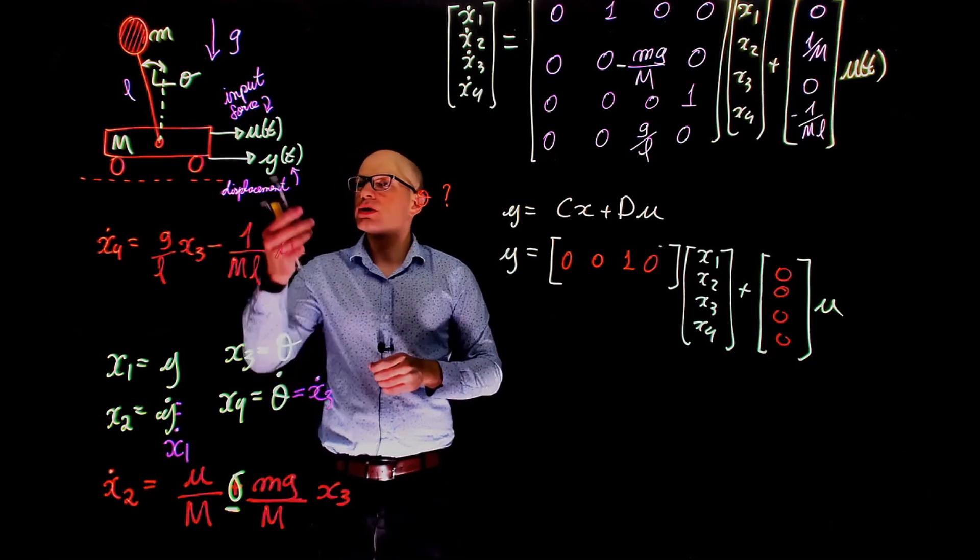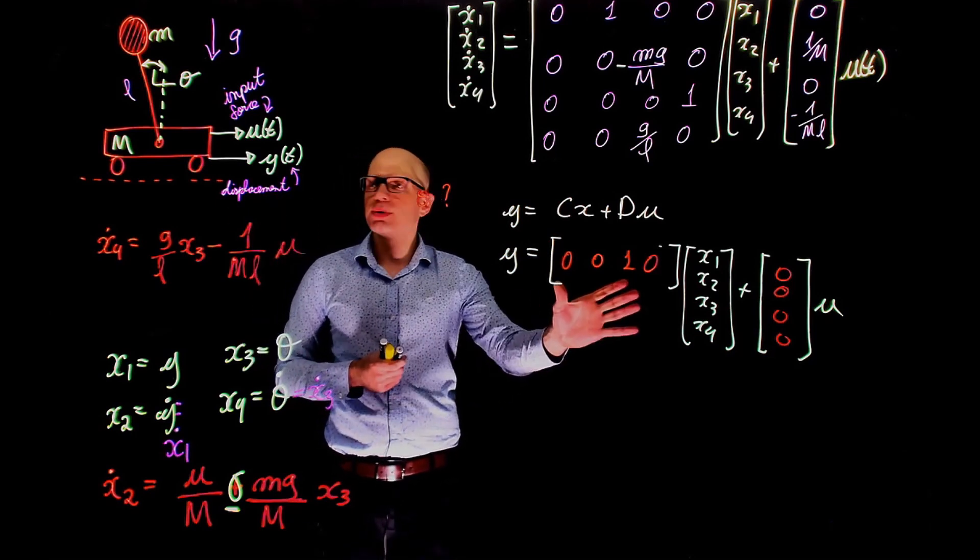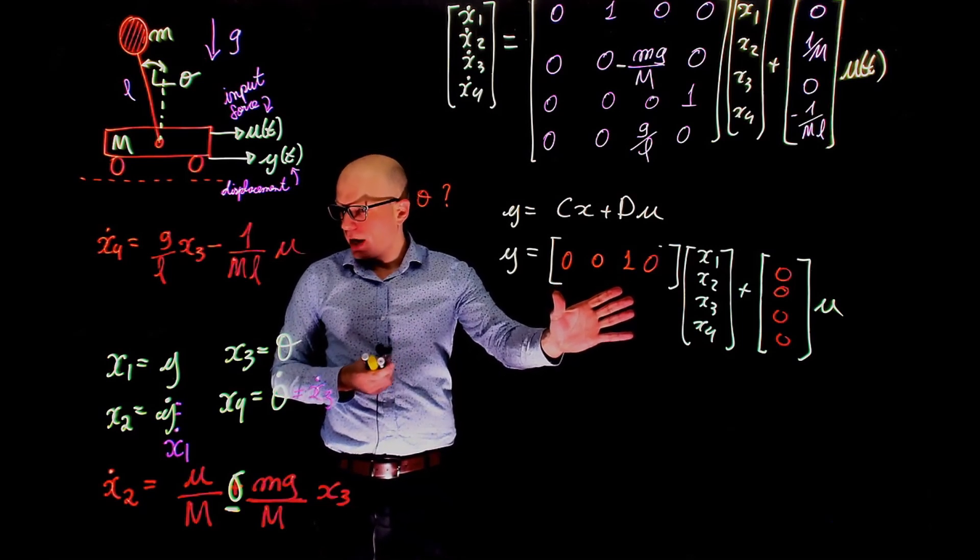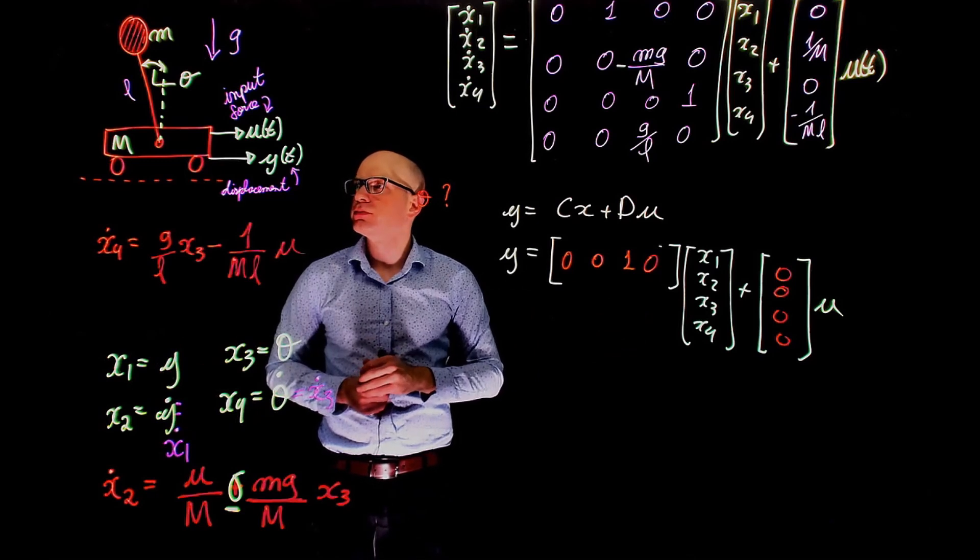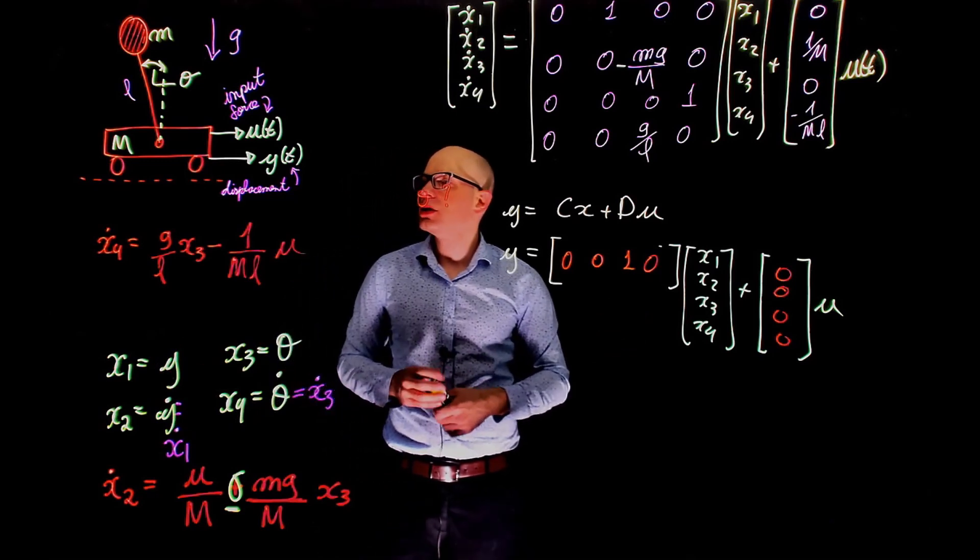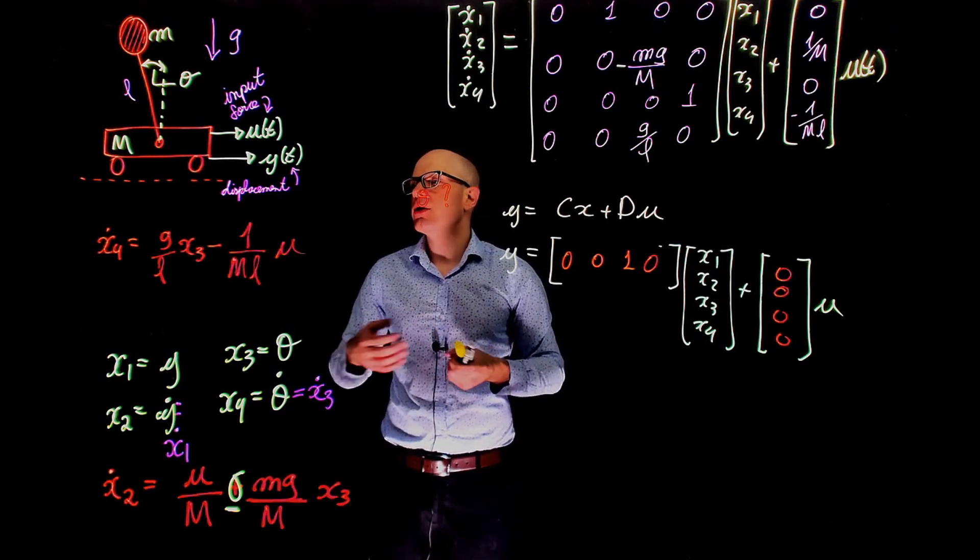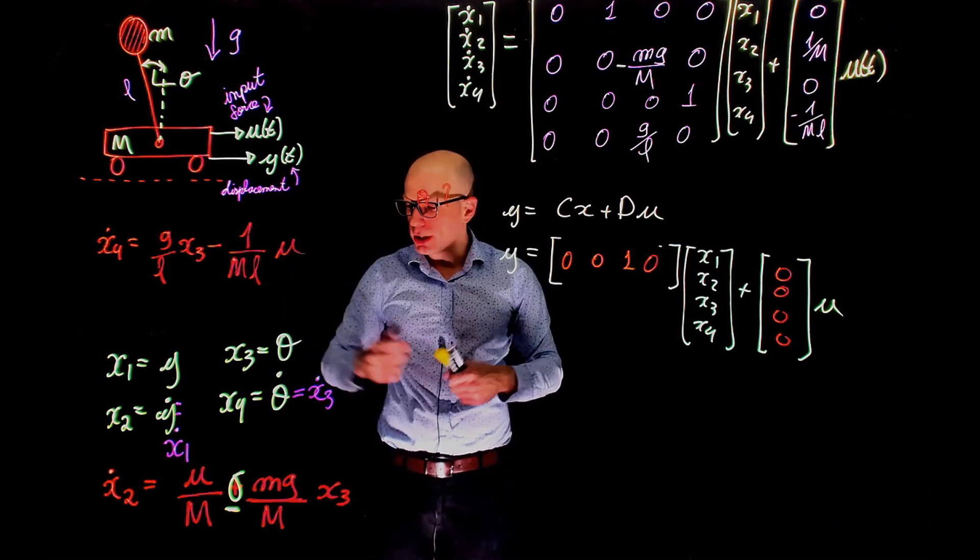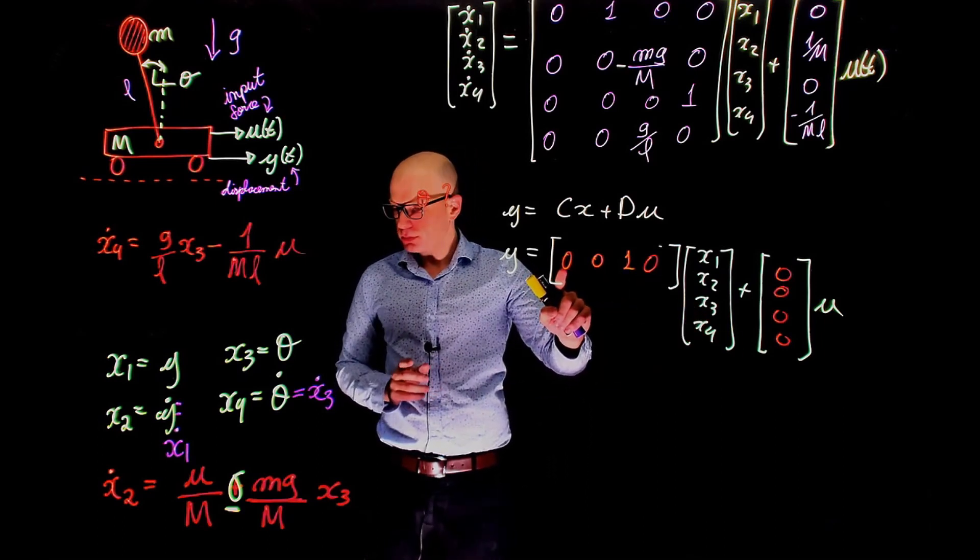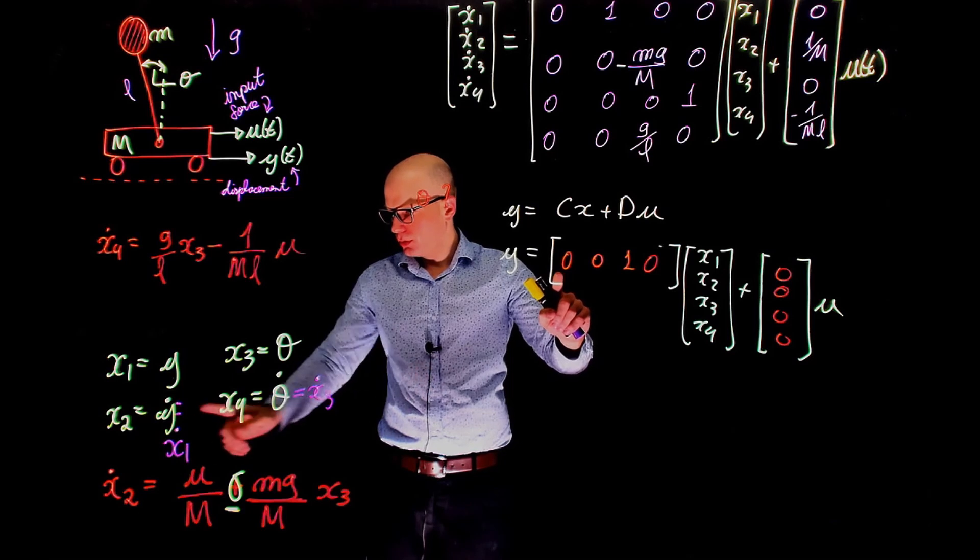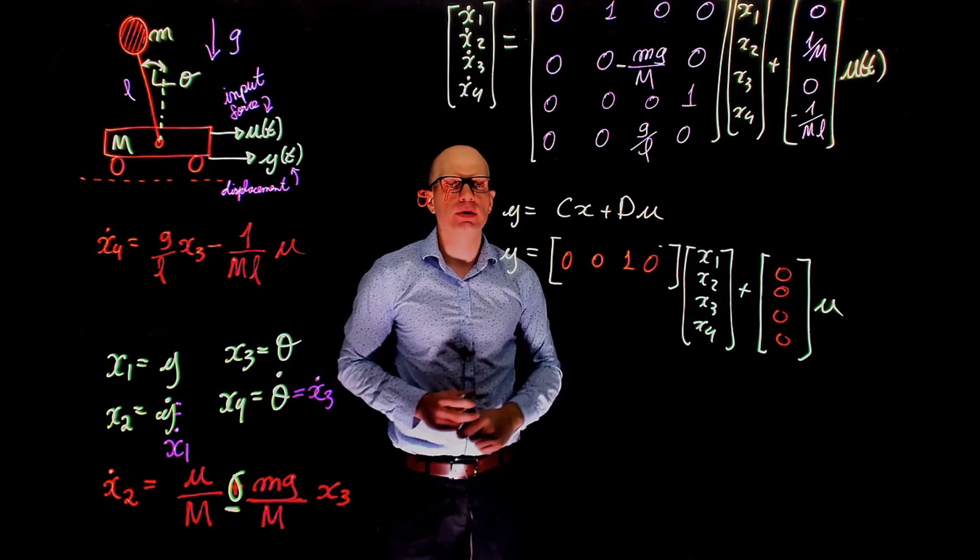If our output was y of t, for example, what would be the difference? Only matrix C would change, and it would change to 1 0 0 0. If the output was the speed of the cart y dot, what would change here? This would be 0 1, y dot is taking x2, 0 0, and everything else is the same.